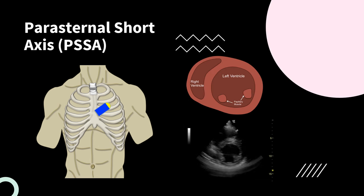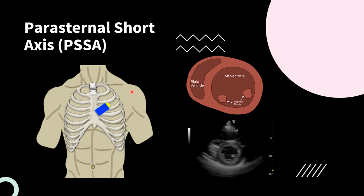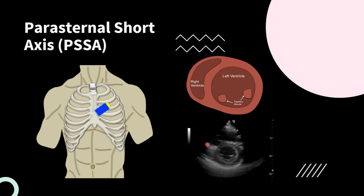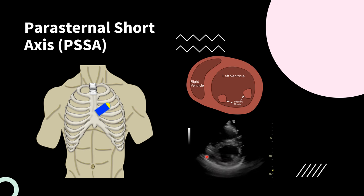Next is the parasternal short axis view. We'll use the same cardiac window but rotate the probe 90 degrees so the probe marker is pointed to the patient's left shoulder. This gives us the mid-papillary view, where the papillary muscles are visible. You'll see a circular left ventricle and a crescent-shaped right ventricle. Note there are multiple short axis views — you can move toward the apex or base — but we'll focus on the mid-papillary view. This view evaluates left ventricular ejection fraction, wall motion abnormalities, right ventricular size, and interventricular septum movement.